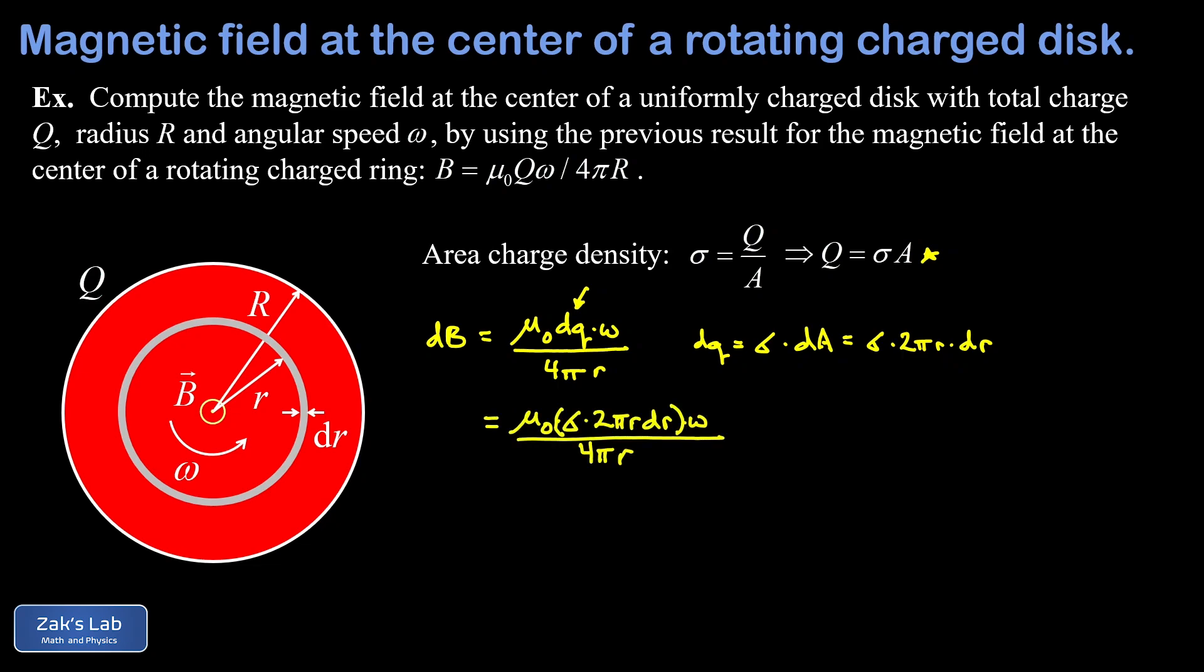So making that replacement in the expression for dB, we notice that several things are going to cancel out here. The little r cancels out, a factor of pi cancels out, a factor of 2 cancels out, leaving us with a 2 in the denominator. And we can clean up this whole expression as one half mu naught sigma omega times dr.